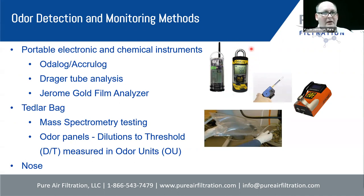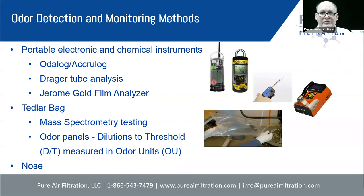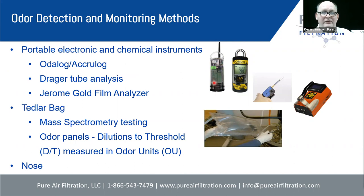The company that builds the Otolog has not really kept this technology up to date. There's a newer device called the Acrolog, which is very similar but has some very nice features — a much better user interface and the ability to download data. This is a Bluetooth device and also has an optional cellular connection so you can monitor it live. It's really just been out for a few years and is a fantastic device. When monitoring hydrogen sulfide, these are good devices.